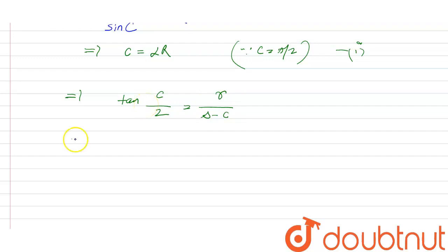So now what we get is, angle C is π/2, which means tan(π/4), and tan(π/4) is 1. So from here we get that small s minus c is equal to r.